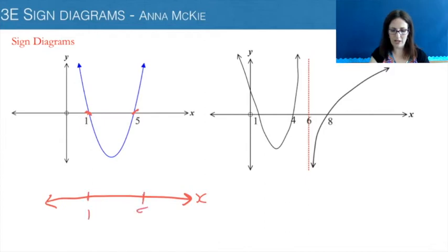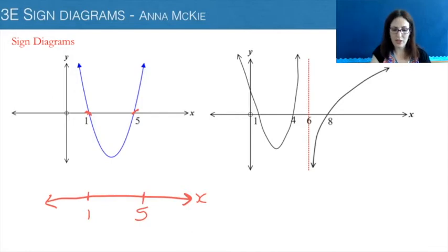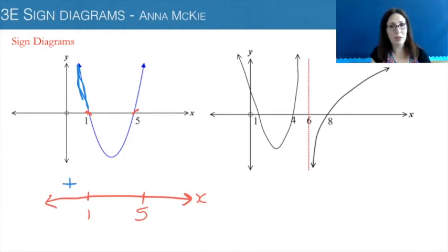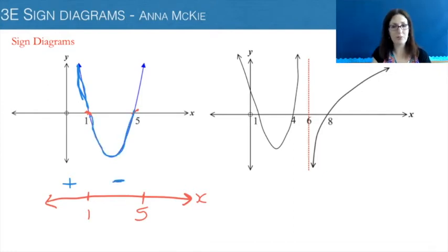So here we have a one and a five, and the sign diagram is a visual representation. Looking at the first part of the graph on the left, it is above the x-axis, so to imply above, we put a positive sign. Between one and five it's below, so we put a subtract sign. And then after five, it's above.